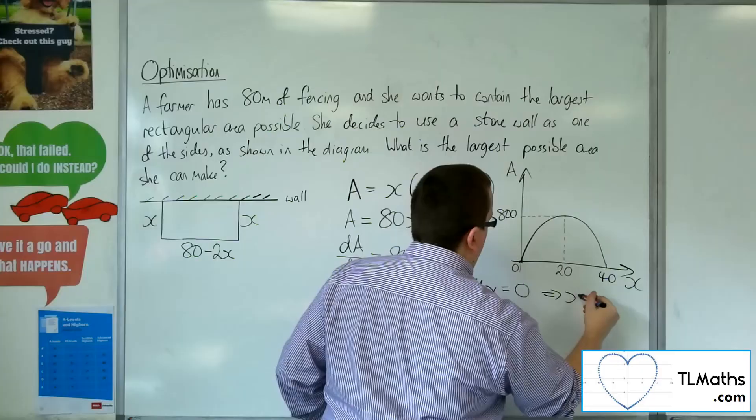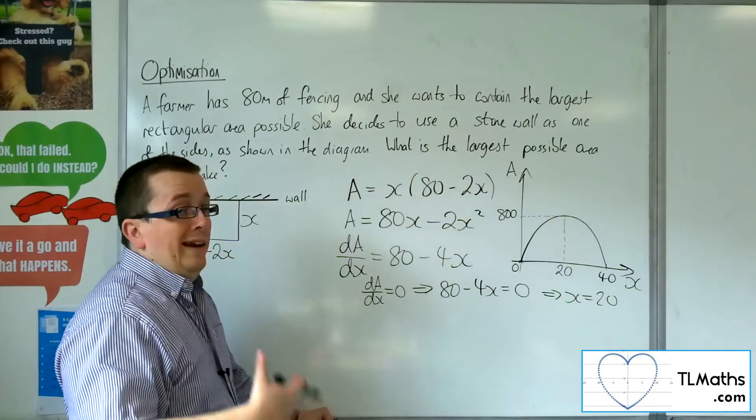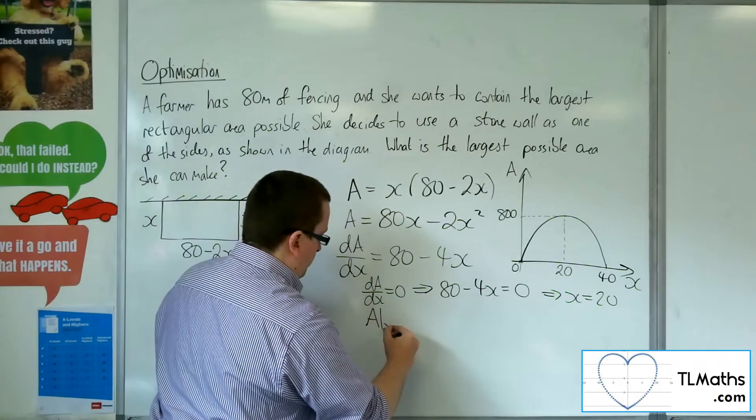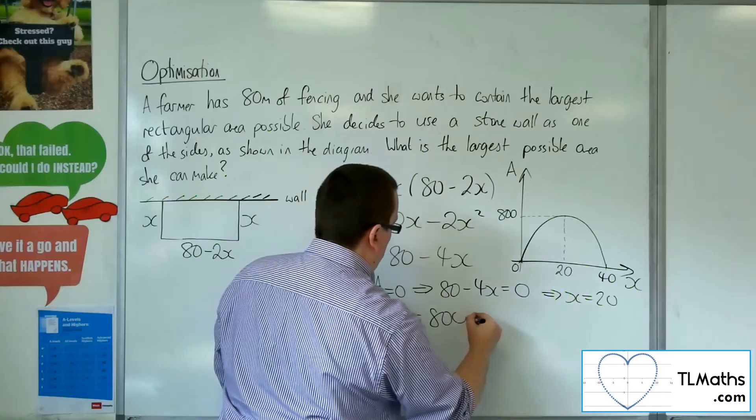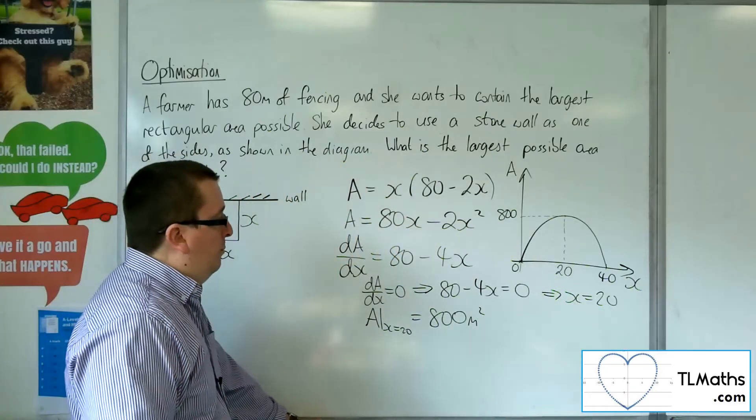And so x would have to be 20, as we expected. Which allows me to then substitute into the A and get the 800 square meters. And that is the maximum possible area.